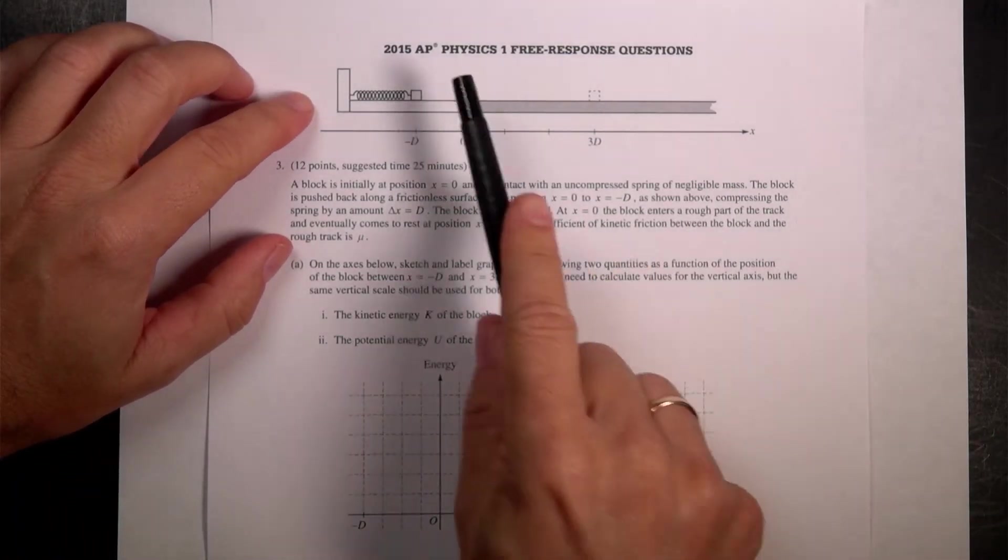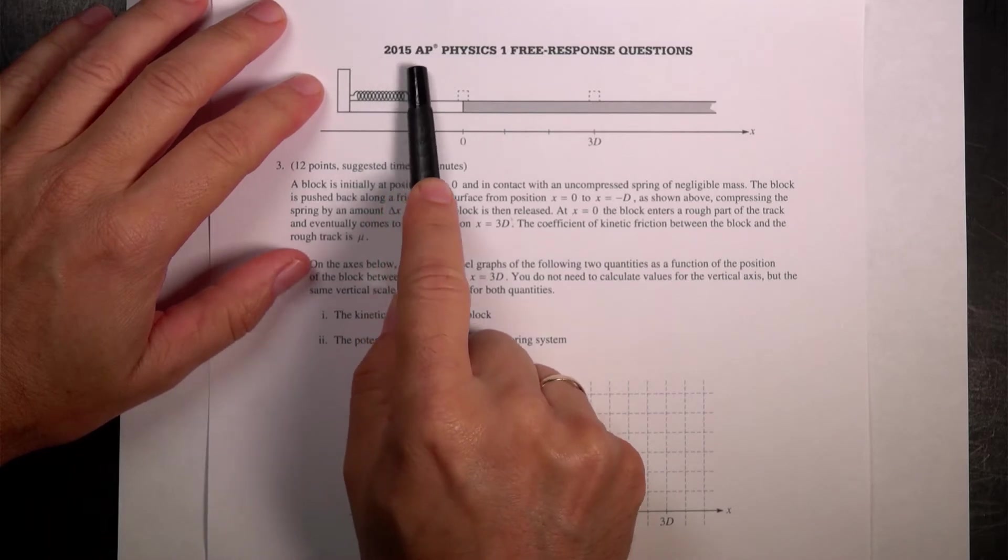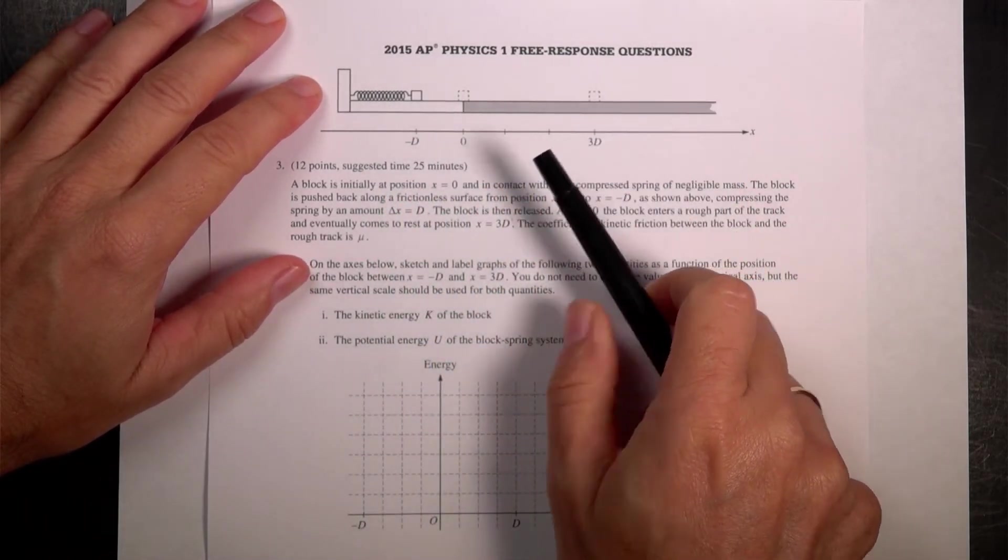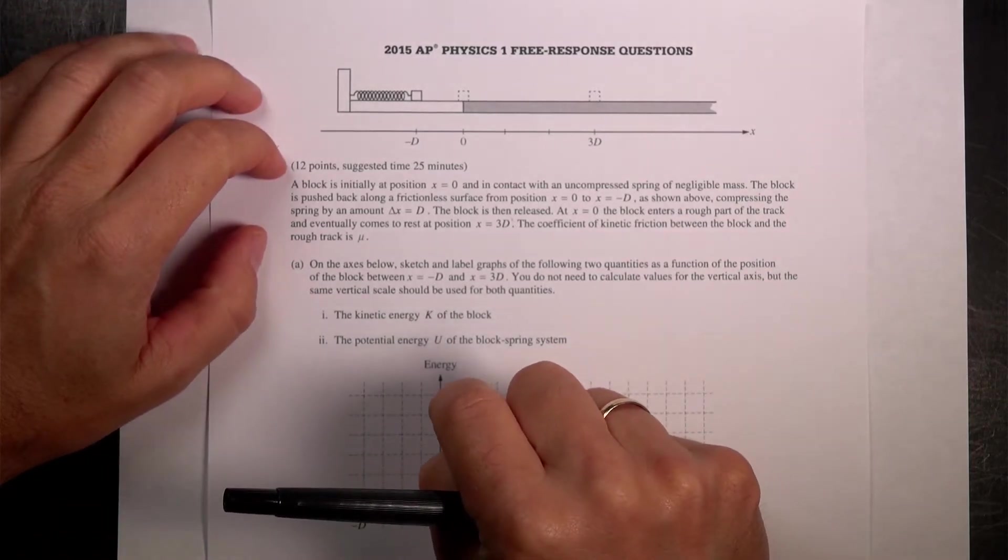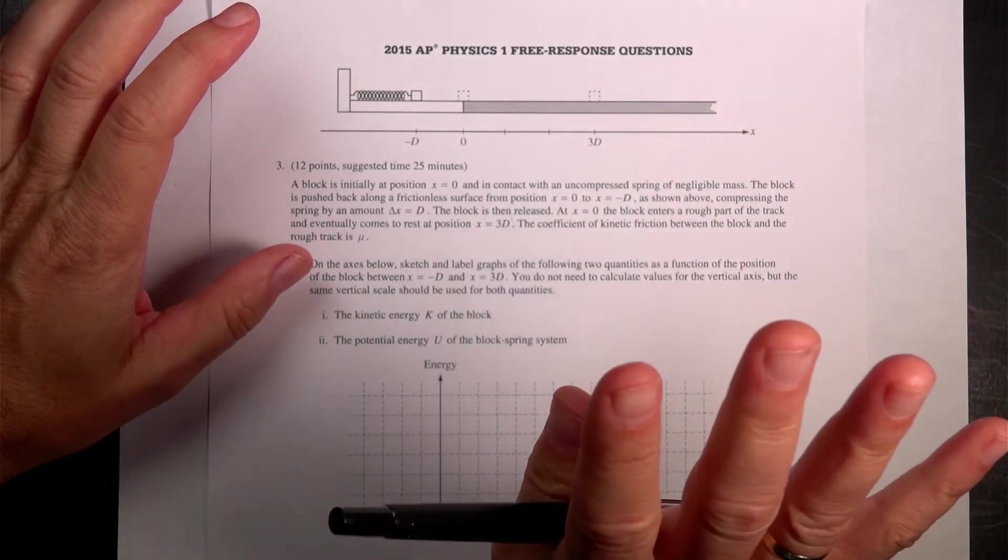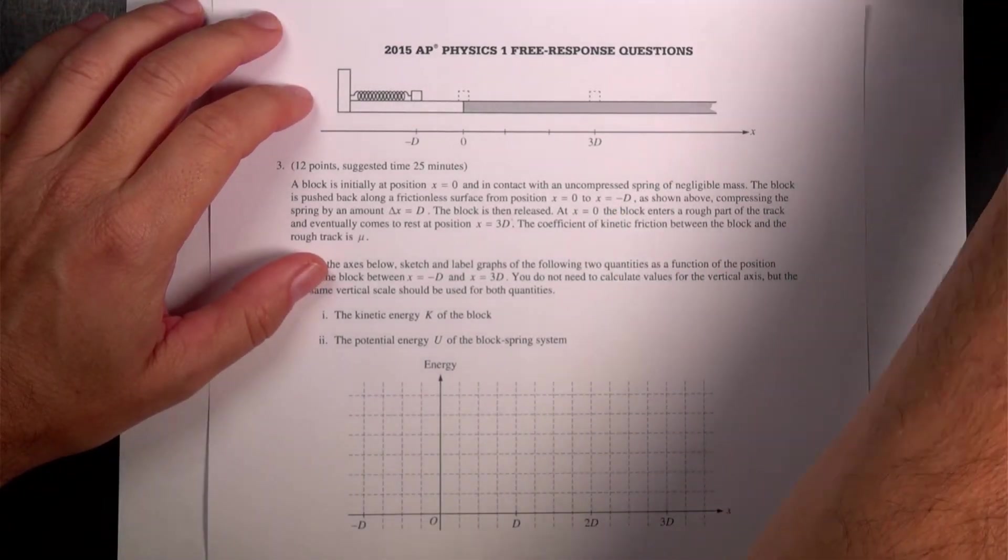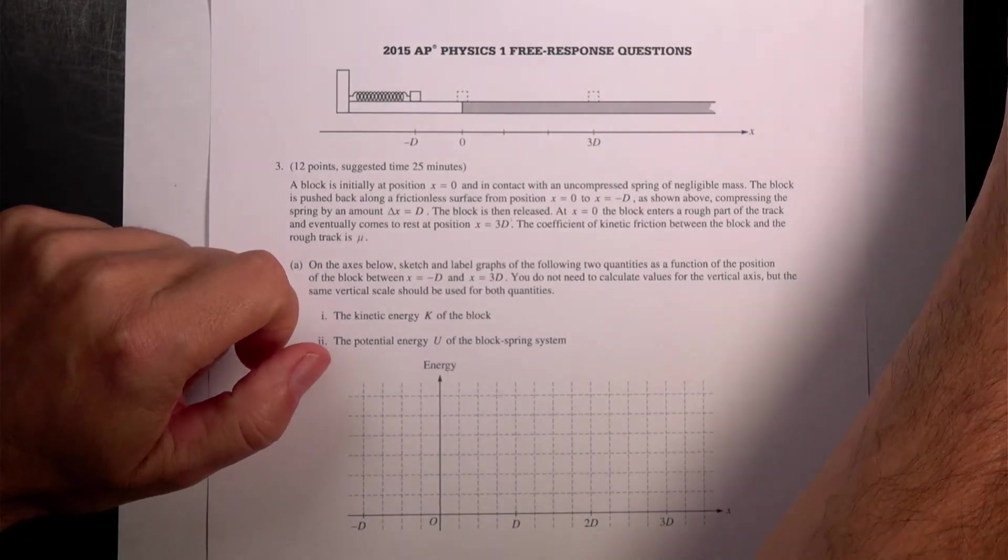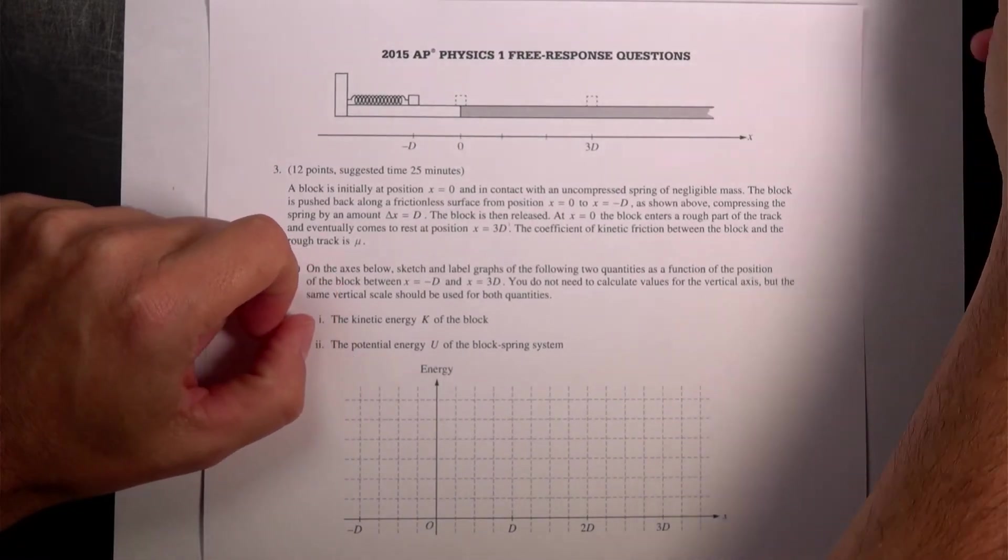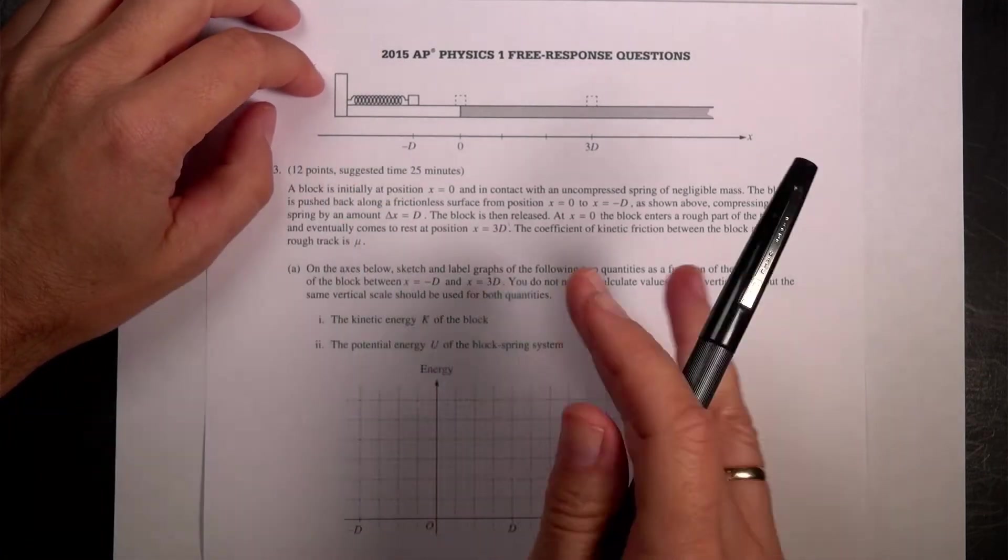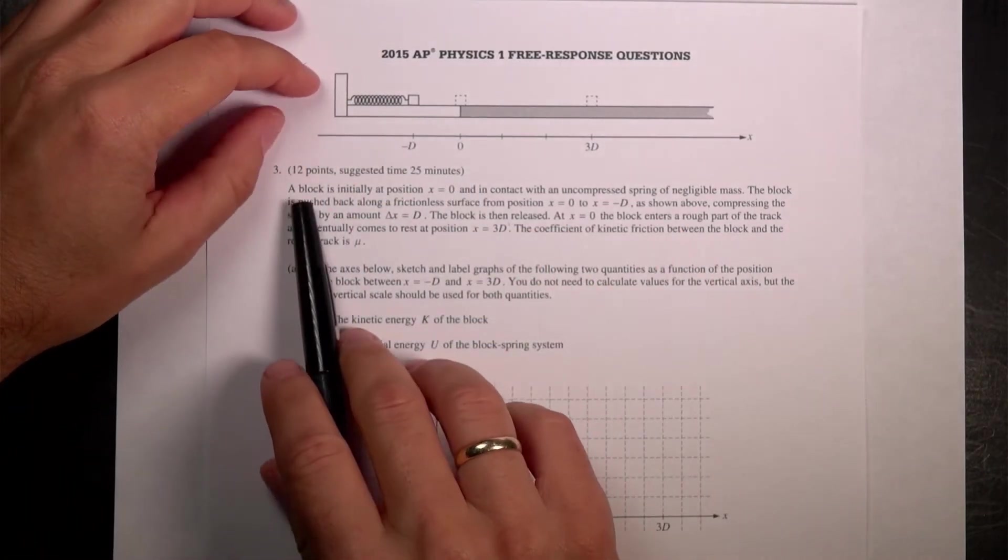I am continuing to work through the 2015 AP Physics 1 free response questions. This is a practice test you can find online. I just wanted to work through it and see what it's like. I've never done AP Physics. I've already gone over the equation sheet that comes with the test. I did problems 1 and 2, now I am on problem number 3. I haven't really looked at this, so let's just get to it. It's a little small, but I don't want to zoom in and zoom out, so I'll just read it to you.